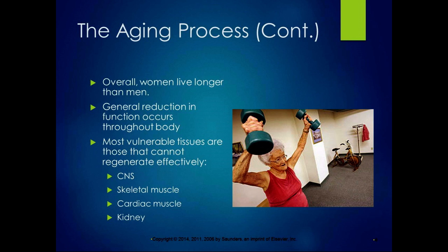Overall, women live longer than men, though individuals vary. For most people, a general reduction in function occurs throughout the body. The most vulnerable tissues to aging are the ones that can't regenerate effectively: the central nervous system, skeletal muscle, cardiac muscle, and kidneys. Kidneys are hugely important in many body systems, and breakdown in kidney function during aging can cause a lot of problems.